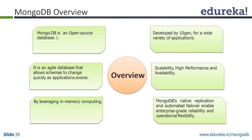MongoDB is an open source database, and it is being developed by 10gen. It is an agile database that allows a schema to change quickly as the application evolves. It gives you a dynamic schema — I will show you how it provides a dynamic schema and how you can create most things on-the-fly.